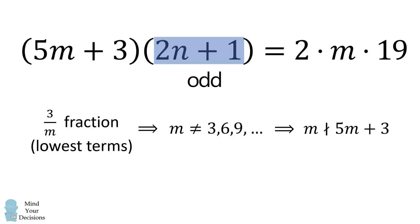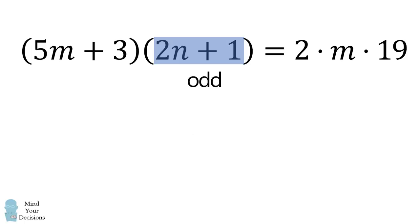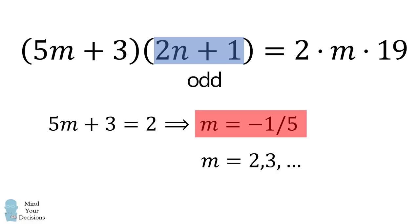This means there are two possible cases for 5m plus 3. One case is that 5m plus 3 could be equal to 2. But in that case, m would be equal to negative 1 fifth. And this is a problem because we know that 3 over m is a fraction in lowest terms, so m has to be a whole number that's greater than or equal to 2. So we can exclude this possibility.